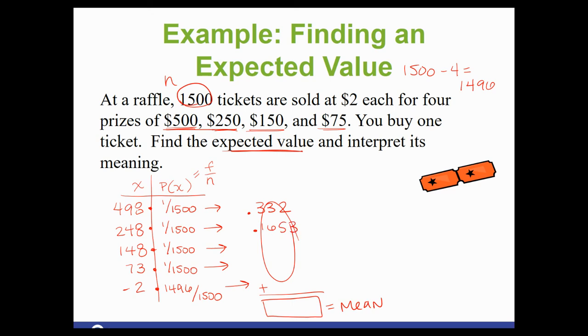Again, if you get a lot of decimals, I always recommend at least rounding to four. Don't forget the negative on that last one.